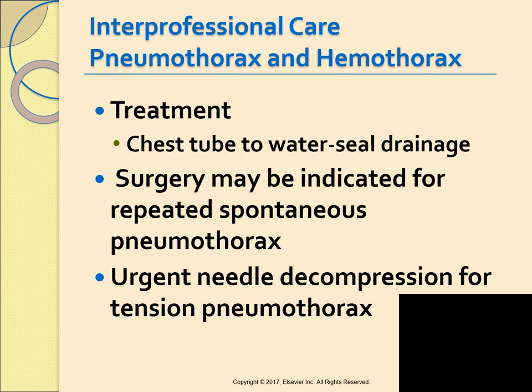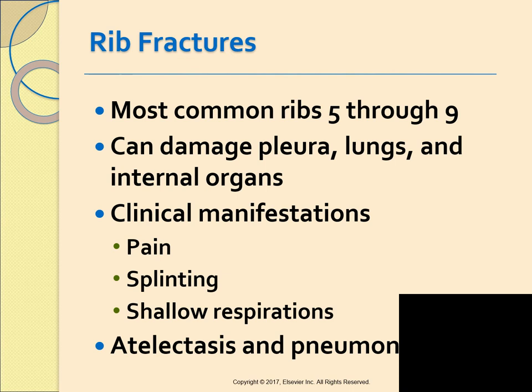The most definitive and common treatment for a pneumothorax or hemothorax is a chest tube hooked to water seal drainage. Repeated spontaneous pneumothorax may need surgical treatment. A tension pneumothorax is always a medical emergency requiring urgent needle decompression, followed by chest tube insertion.